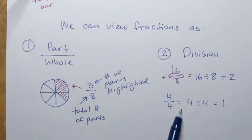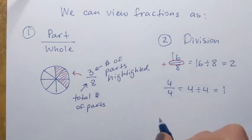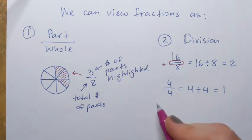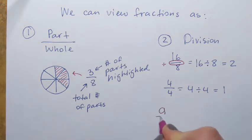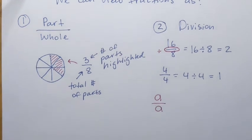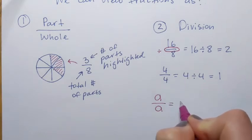If that makes sense, we can generalize it. If I have a fraction that has the same numerator as the denominator — in general, A over A for anything A — then this kind of fraction will always be equal to 1.